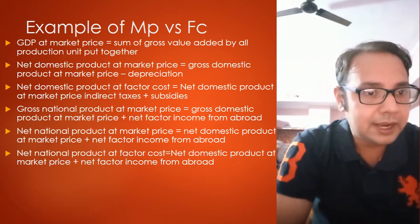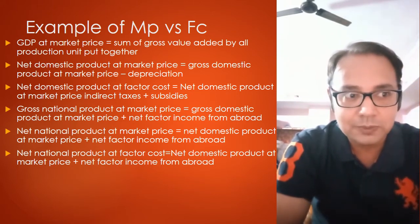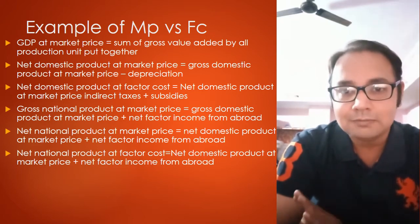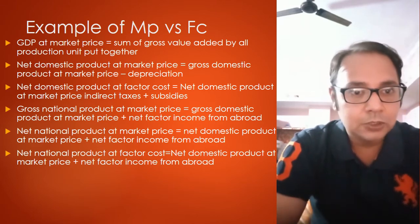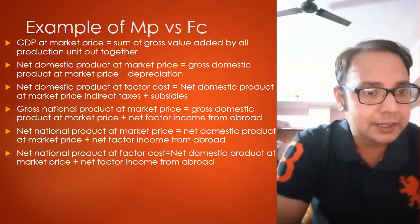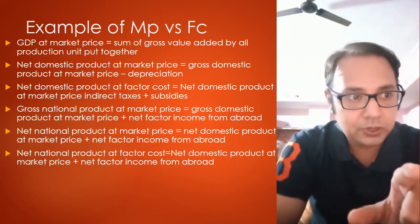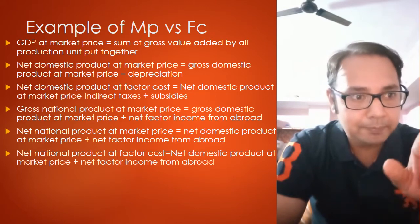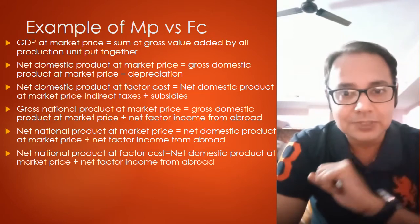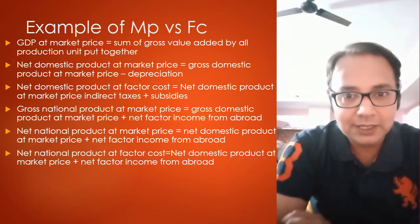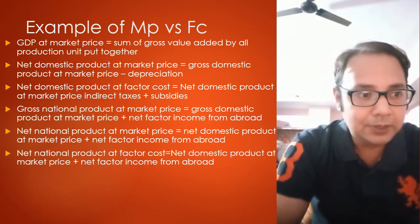The third is Net Domestic Product at Factor Cost. Factor cost here means minus indirect taxes plus subsidy. So: NDP at factor cost equals NDP at market price minus indirect taxes plus subsidies. The fourth formula is Net National Product at Market Price. Since both sides are 'net,' we have: net national product at market price equals net domestic product at market price plus net factor income from abroad — the net income of foreigners working here and Indians working abroad.